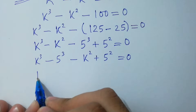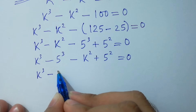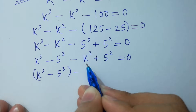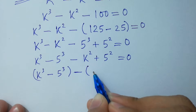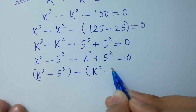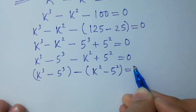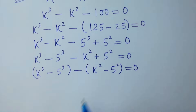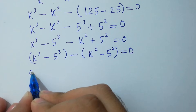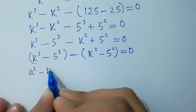k cubed minus 5 cubed minus k squared minus 5 squared equals 0. Since a cubed minus b cubed equals (a minus b)(a squared plus ab plus b squared), and a squared minus b squared equals (a minus b)(a plus b), we apply those factoring formulas.